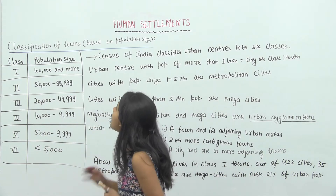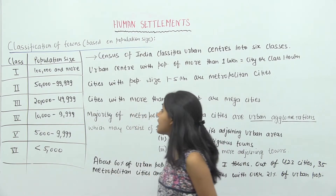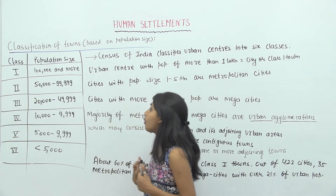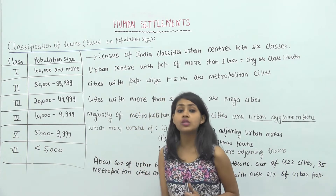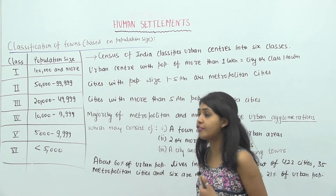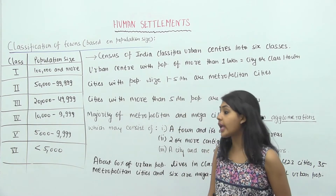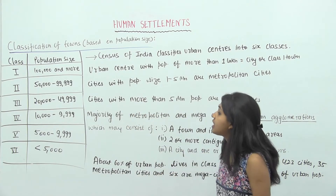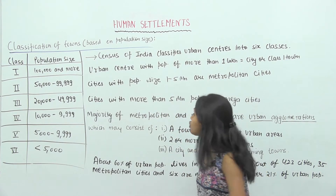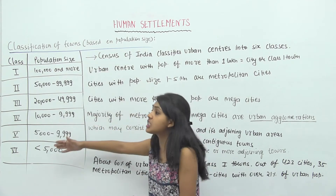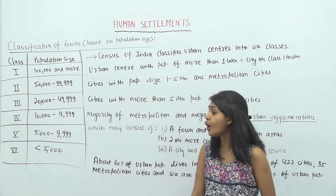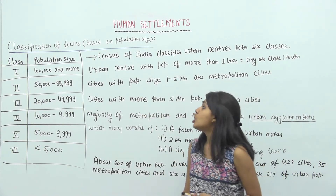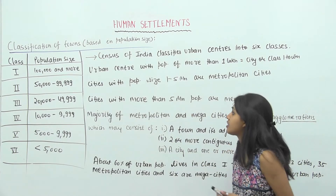According to this table, if a town has a population of 100,000 or more, we call it a Class 1 town. If it has a population of 50,000 or more, it is a Class 2 town. Similarly, a town with a population of 20,000 up to less than 50,000 falls into Class 3. The last is Class 6, which has the lowest population — any town below 5,000 is a Class 6 town. This is the first type of classification of towns.